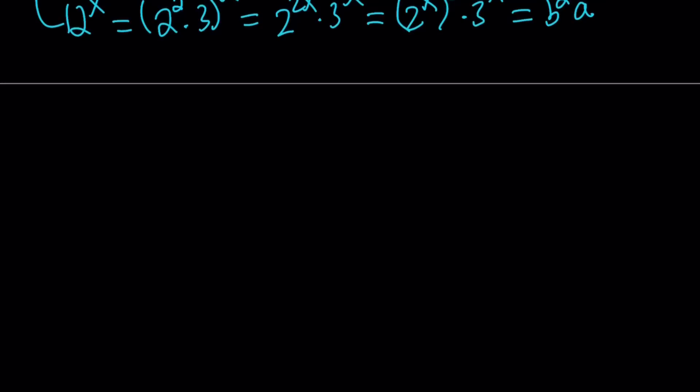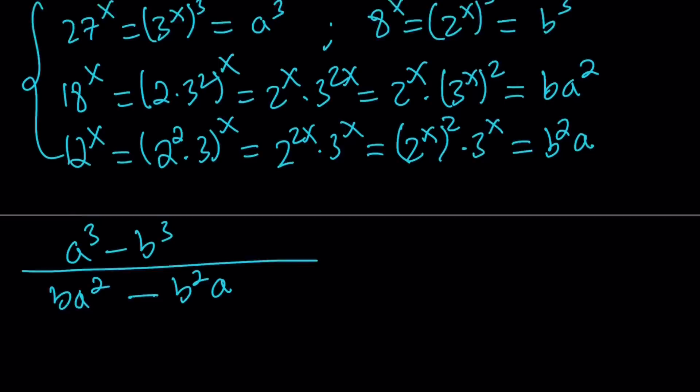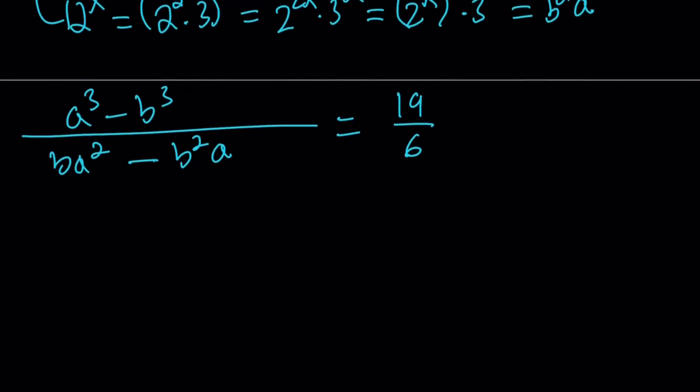So if you make all the replacements, 27 to the power x is replaced with a cubed, and then you have 8 to the x which is b cubed. All of that is divided by 18 to the x which is b a squared minus b squared a. This expression might look a little confusing, it's cubic and equals 19 over 6 of course. But notice that we can factor both the top and the bottom. How?